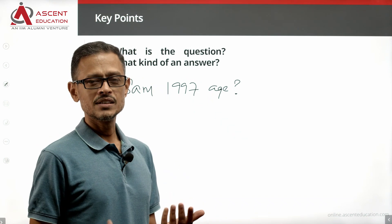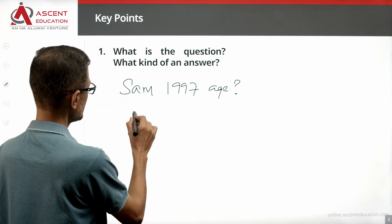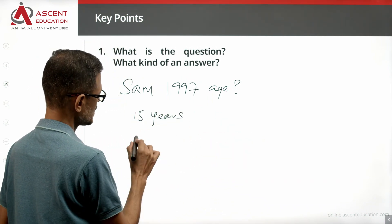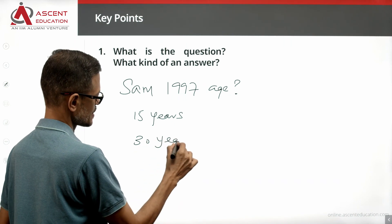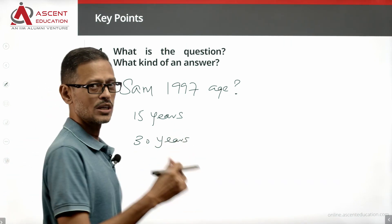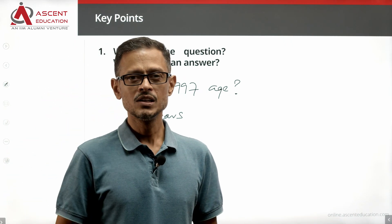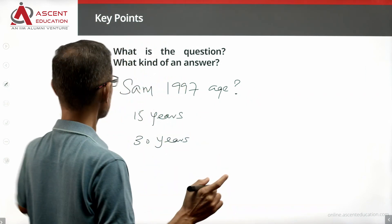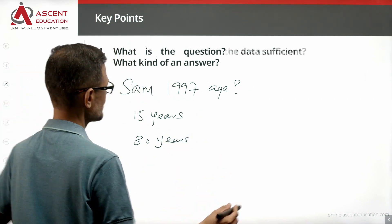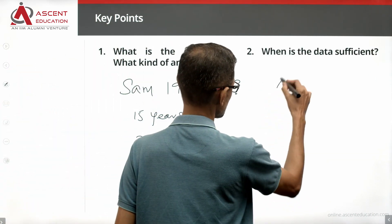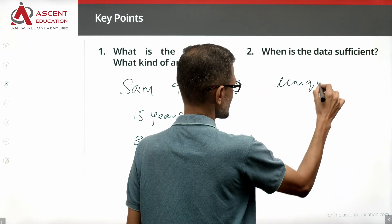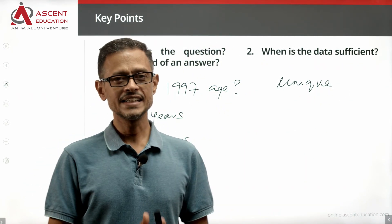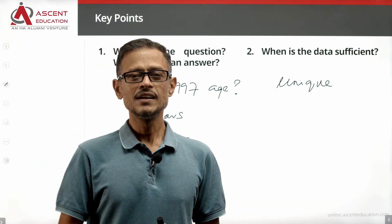For example, if the answer to a question is that Sam was 15 years old in 1997, or Sam was 30 years old in 1997 — we need a unique value. The data is sufficient only when we have a unique value for Sam's age.